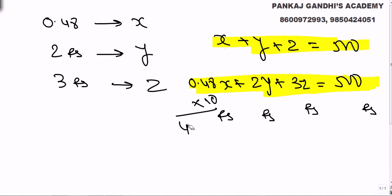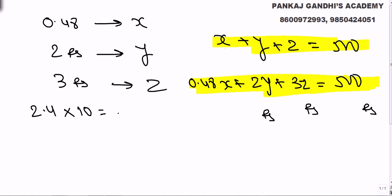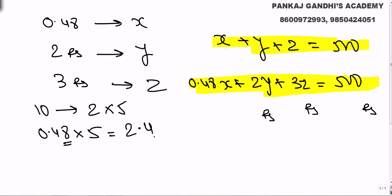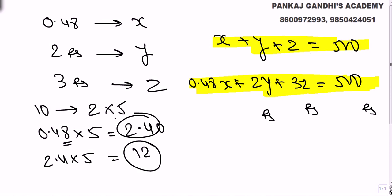To remove decimal places: if we have 2.4 and want to remove one decimal, we multiply by 10. To remove two decimals we'd need 100. But 0.48 is an even number, and 10 = 2 × 5. Since 2 is already a factor, multiplying by 5 removes one decimal: 0.48 × 5 = 2.4. Then multiply by 5 again: 2.4 × 5 = 12. So we need to multiply by 25.